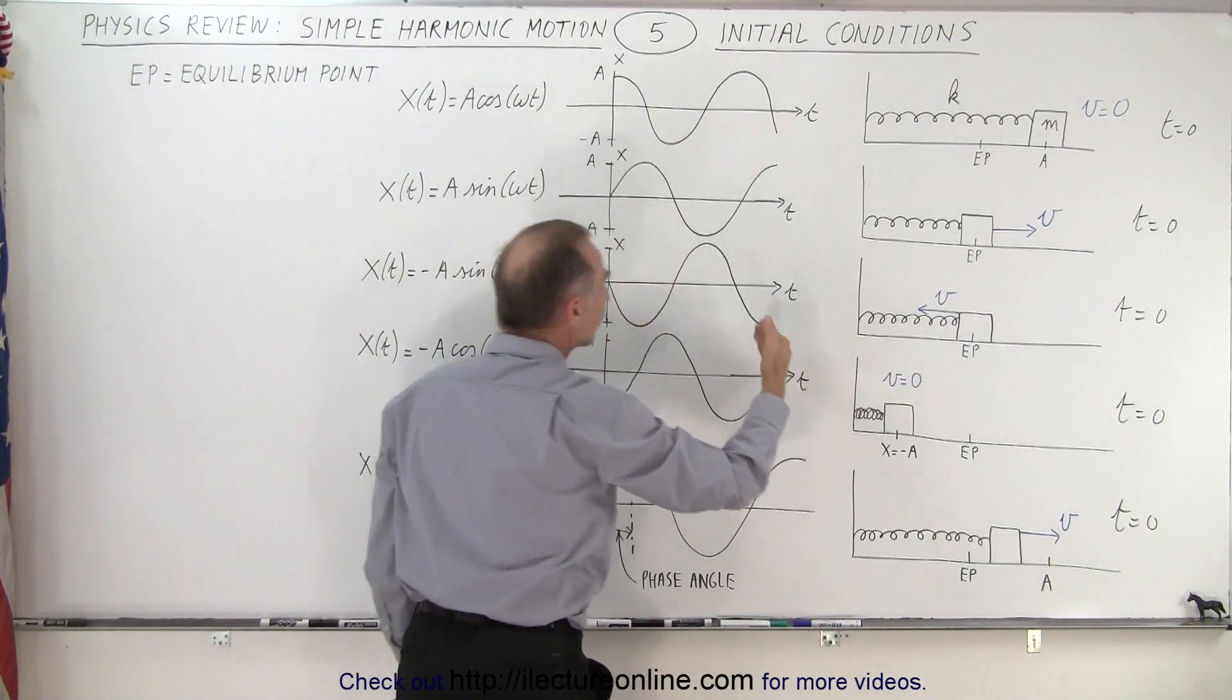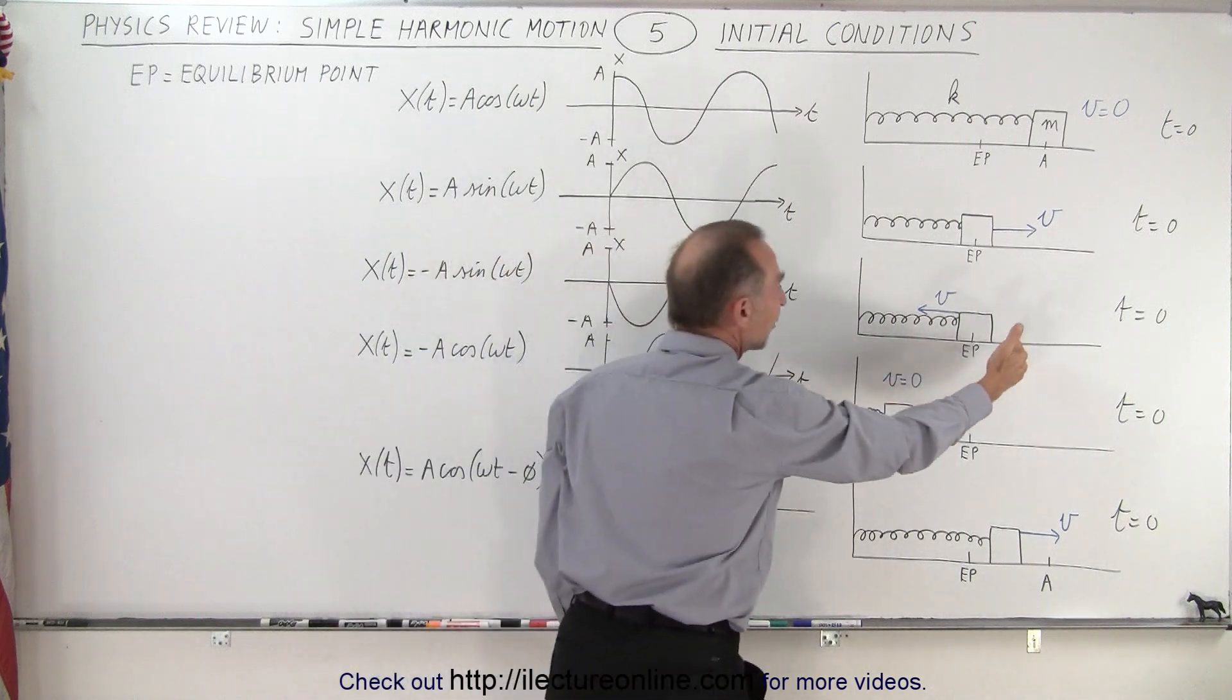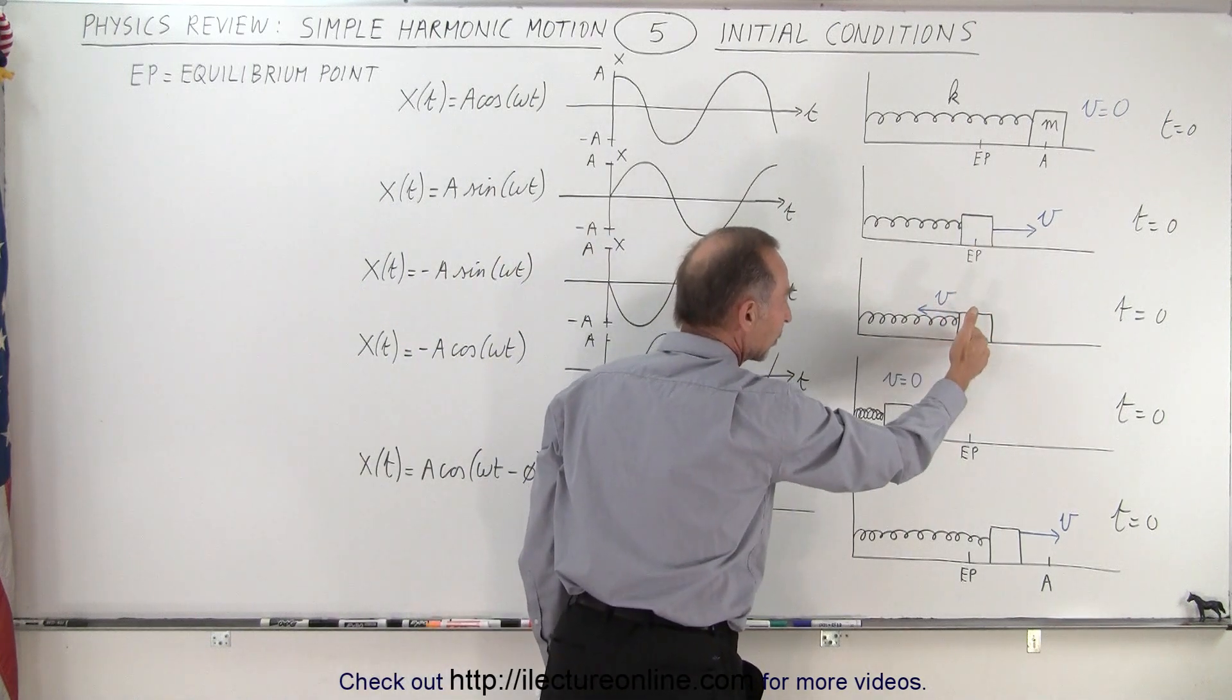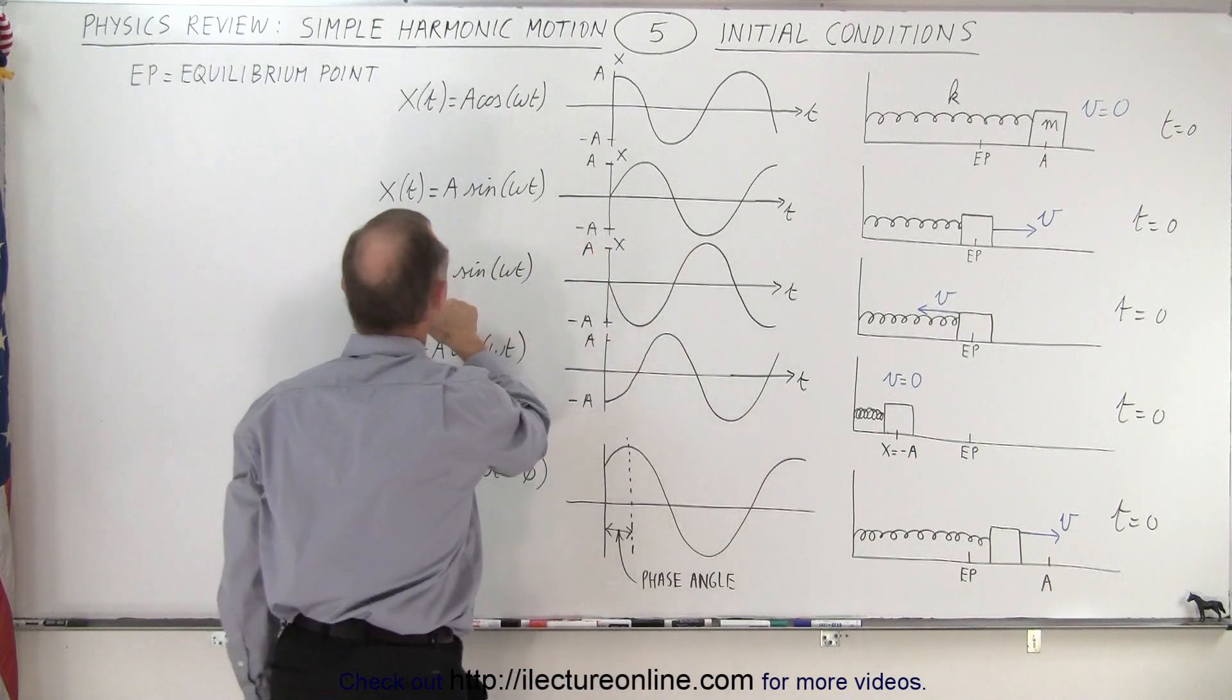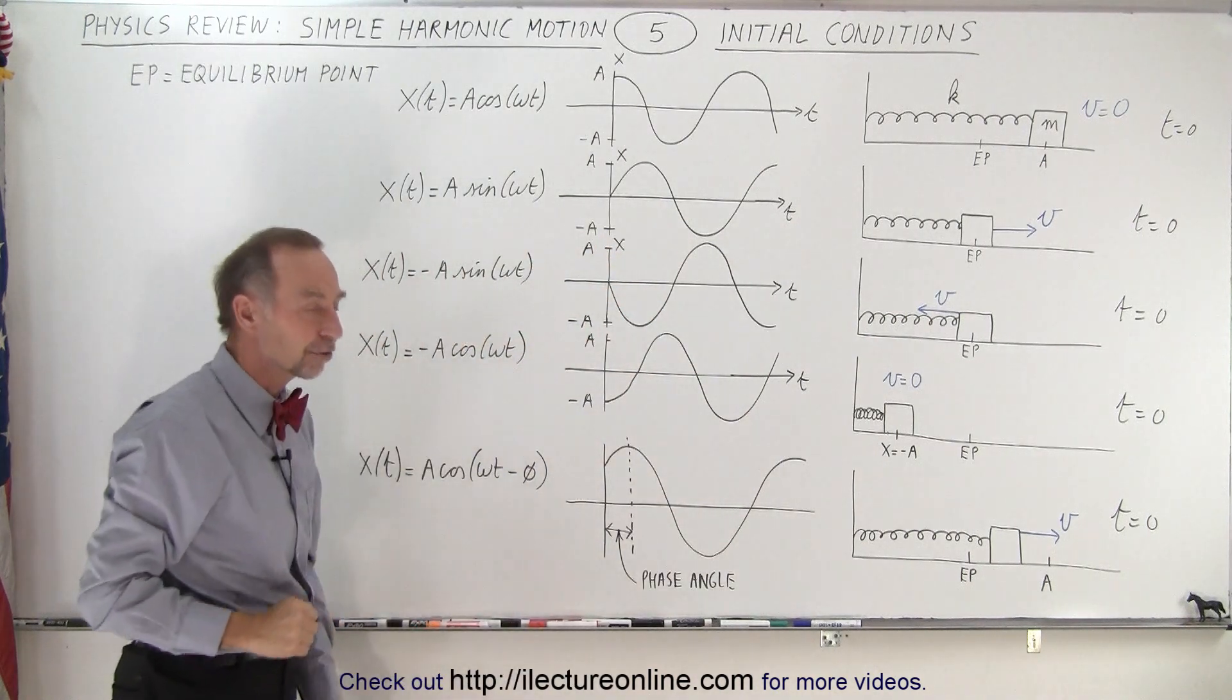If it's moving to the left, notice that it's going to go negative as time moves on from time equals zero. That means you start at x equals zero but move in the negative direction, so you need the negative A sine omega t function.